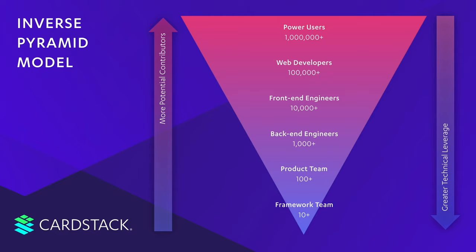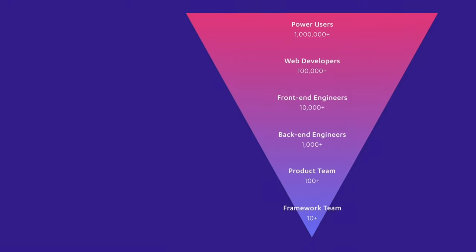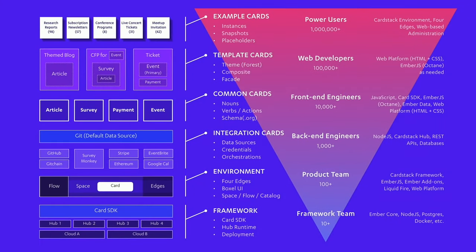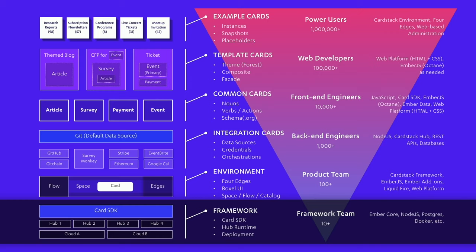Let's dive deeper into what the layers are in this software stack and how they map to this pyramid. We have mapped the Cardstack software stack into six different layers of the hierarchy. A lot of the questions about what cards are is answered by the Cardstack framework — something we spend a lot of time thinking about. It's like building apps for the Apple ecosystem with an iOS SDK.